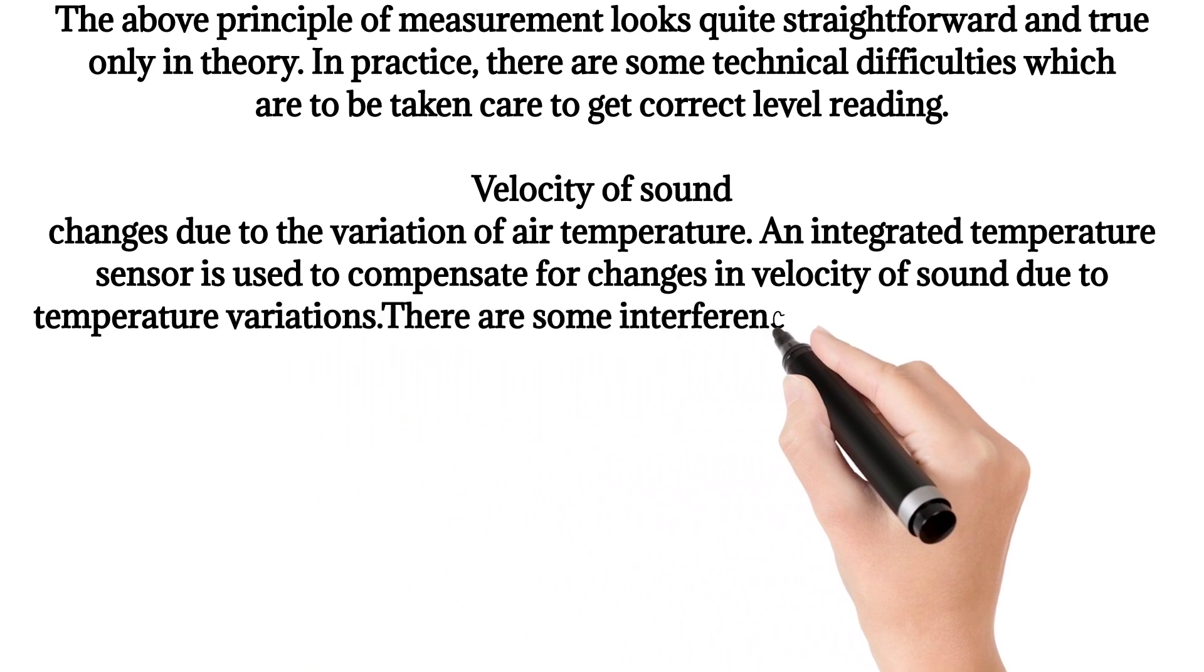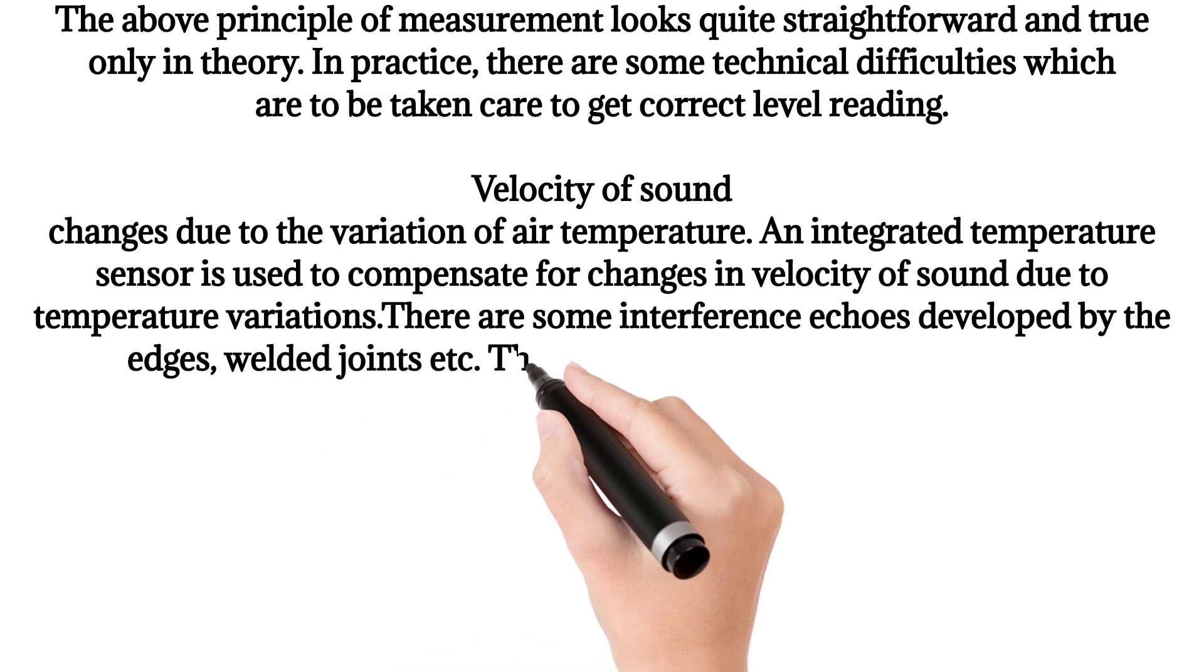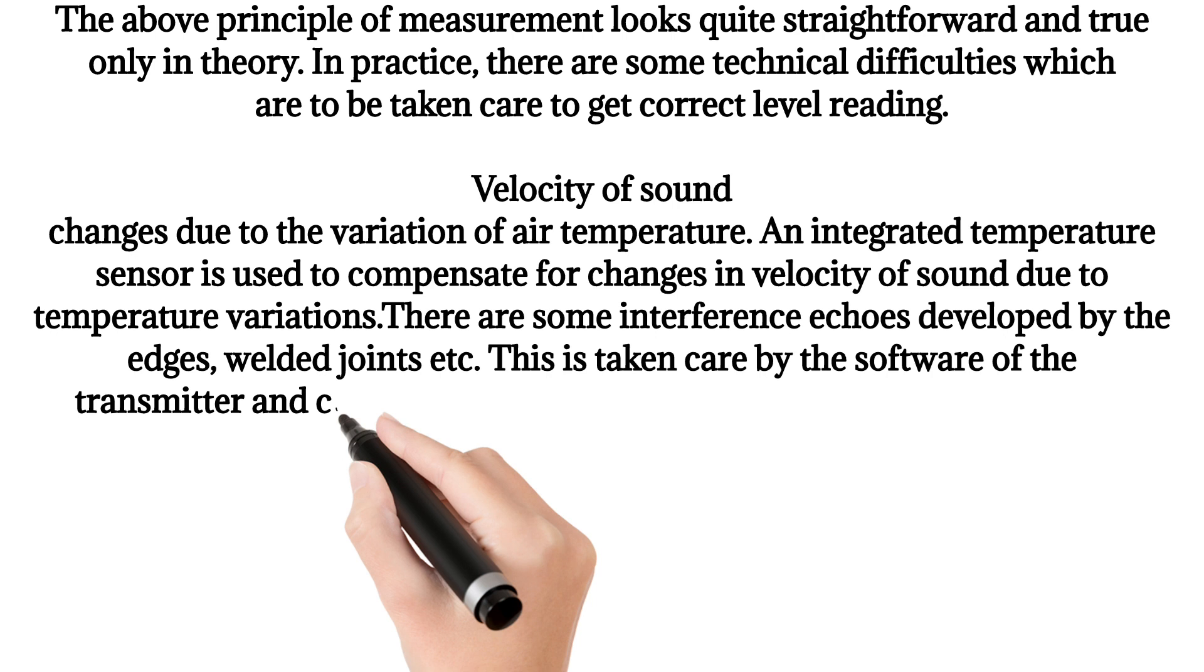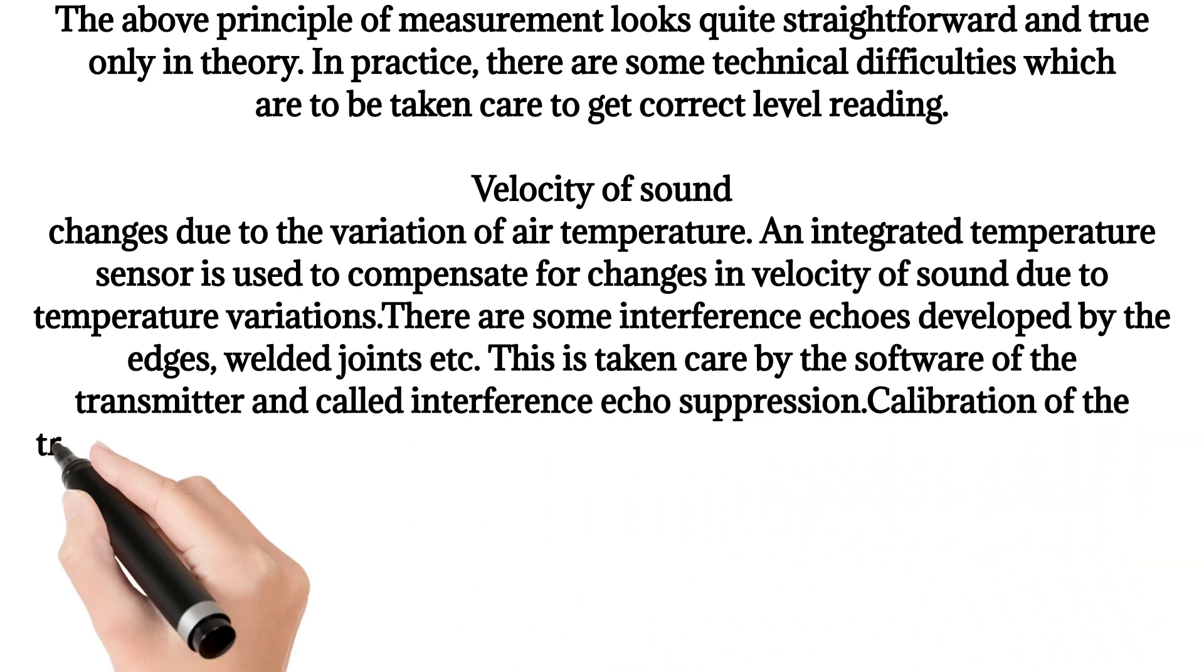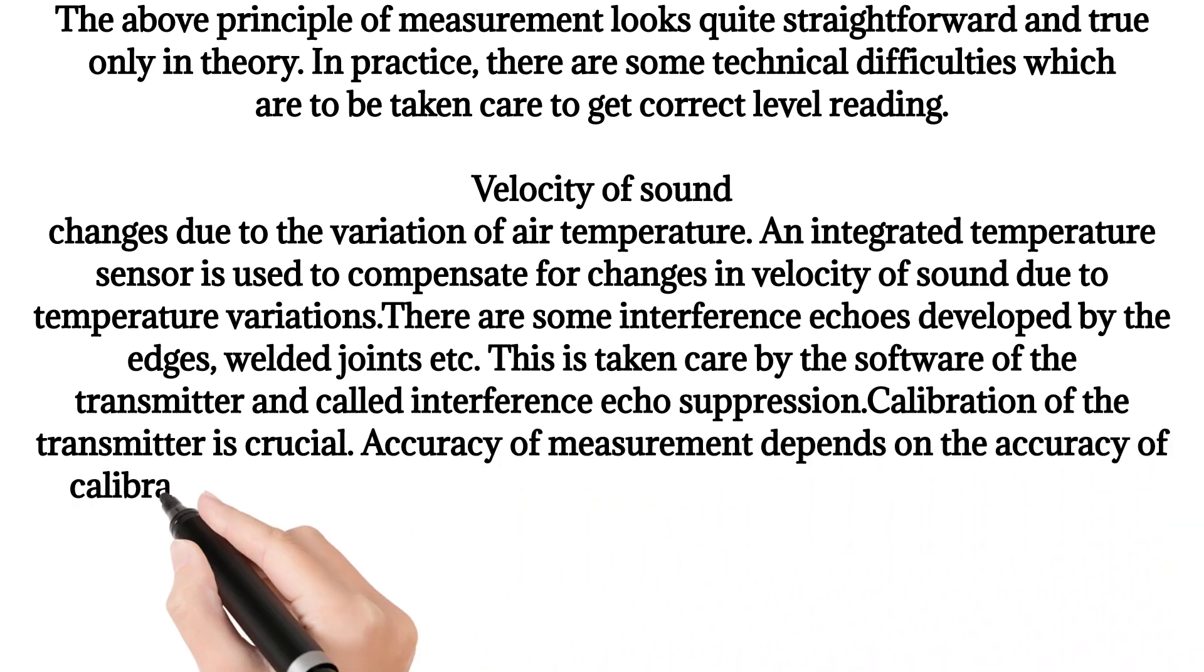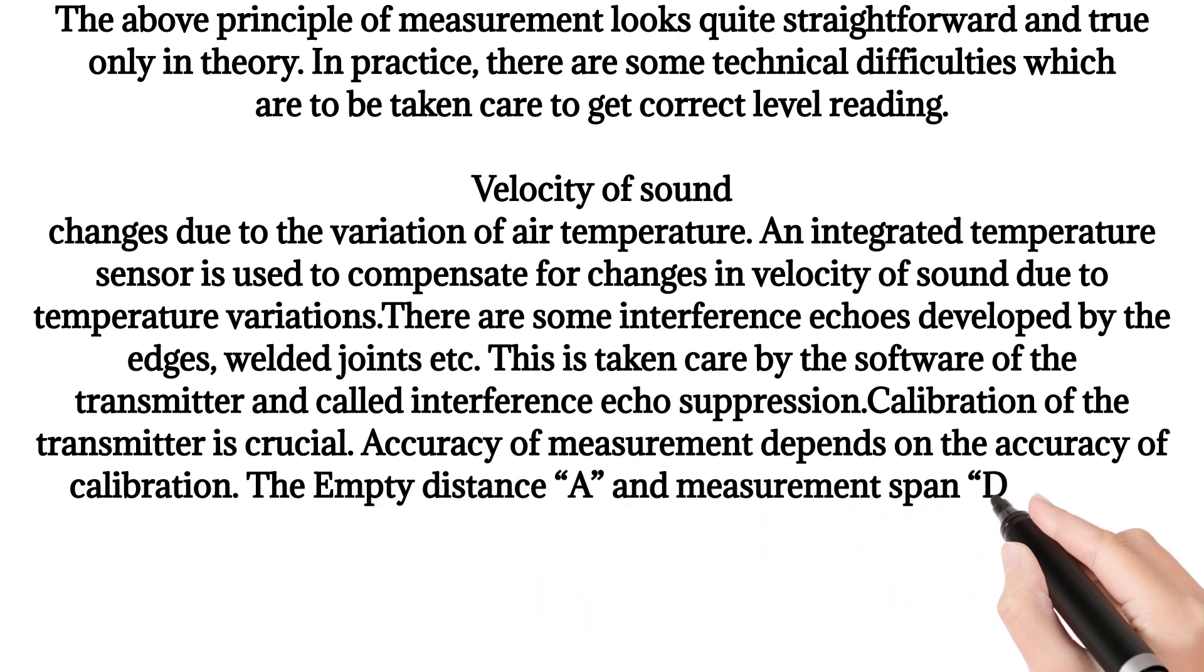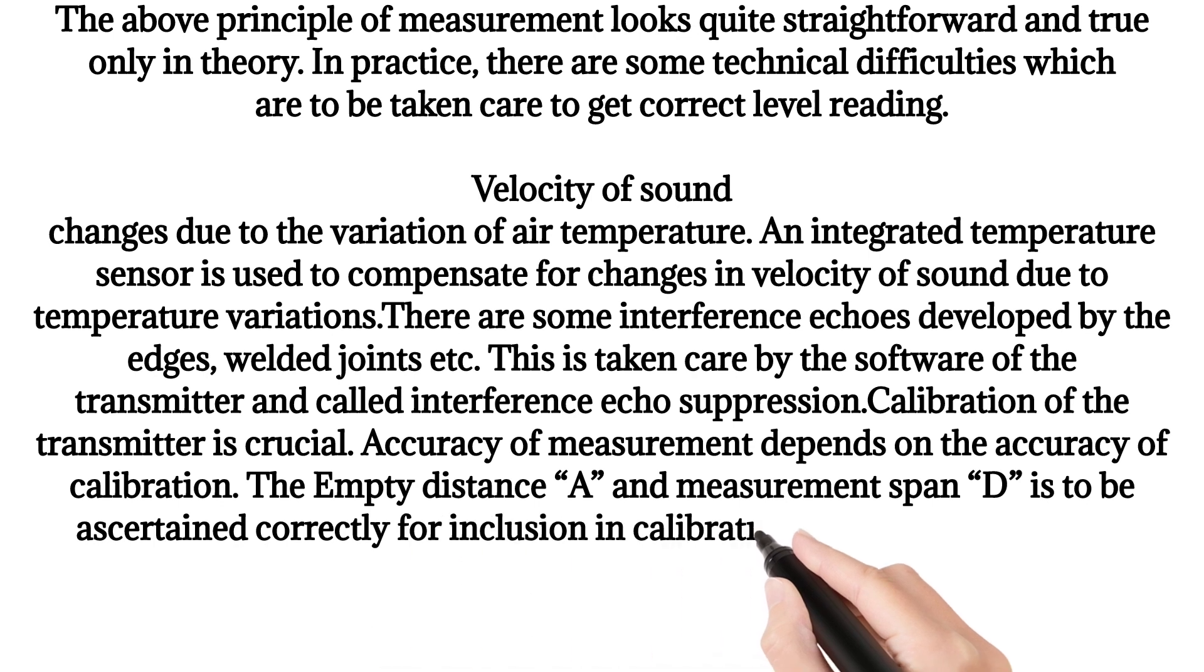There are some interference echoes developed by the edges, welded joints, etc. This is taken care of by the software of the transmitter and called interference echo suppression. Calibration of the transmitter is crucial. Accuracy of measurement depends on the accuracy of calibration. The empty distance A and measurement span D must be ascertained correctly for inclusion in calibration of the transmitter.